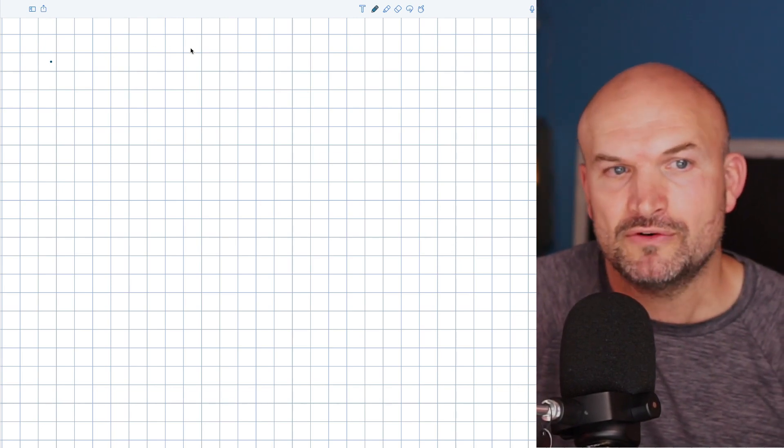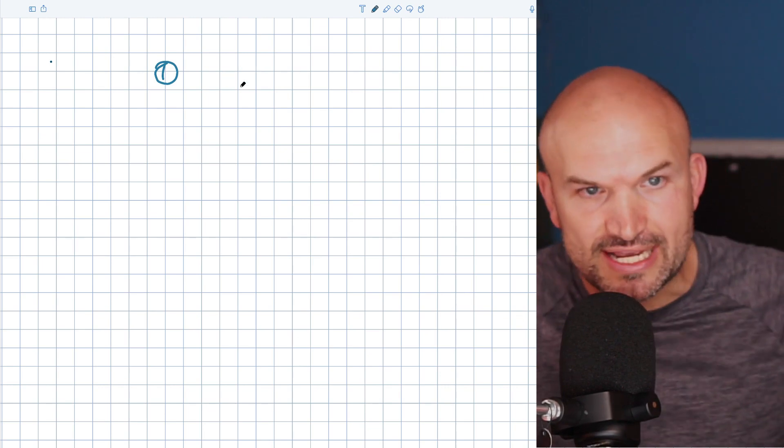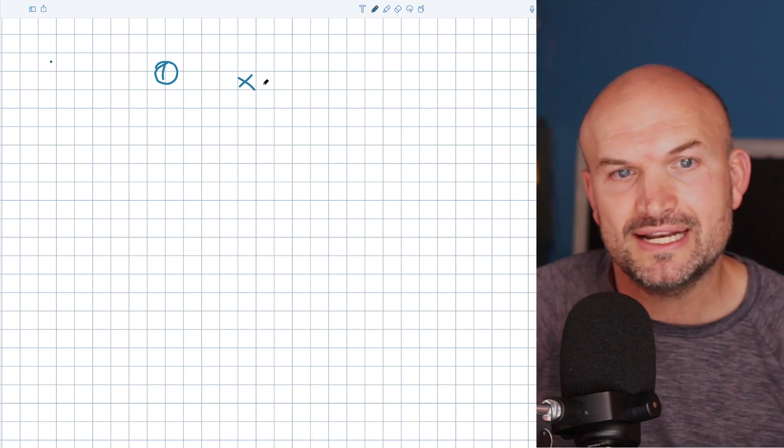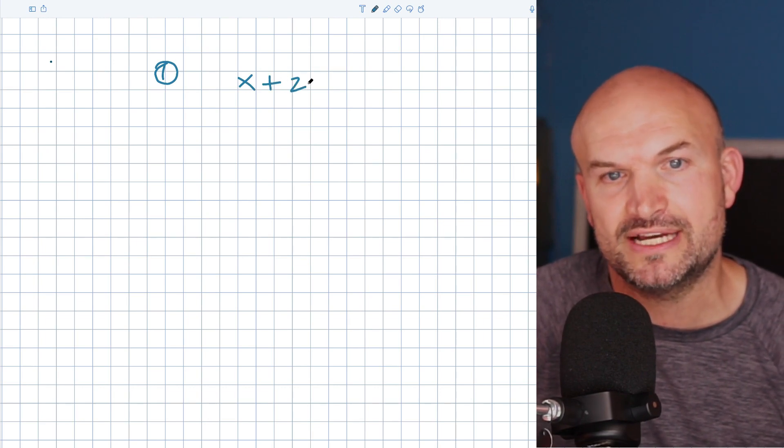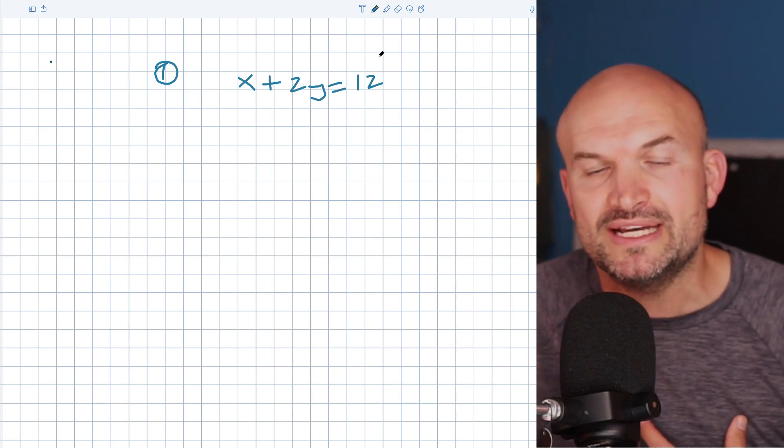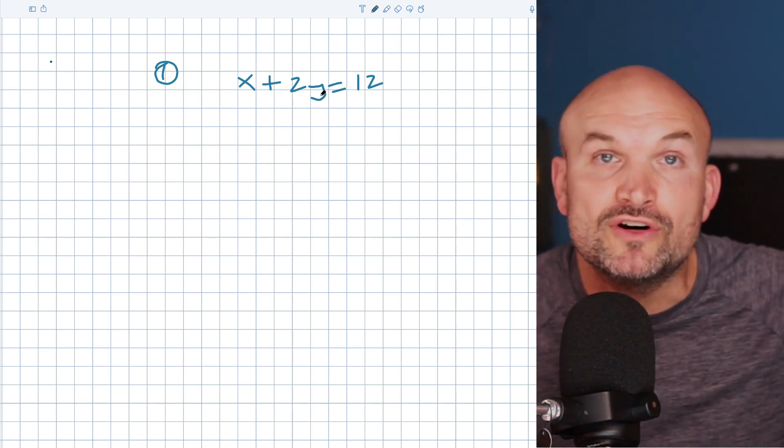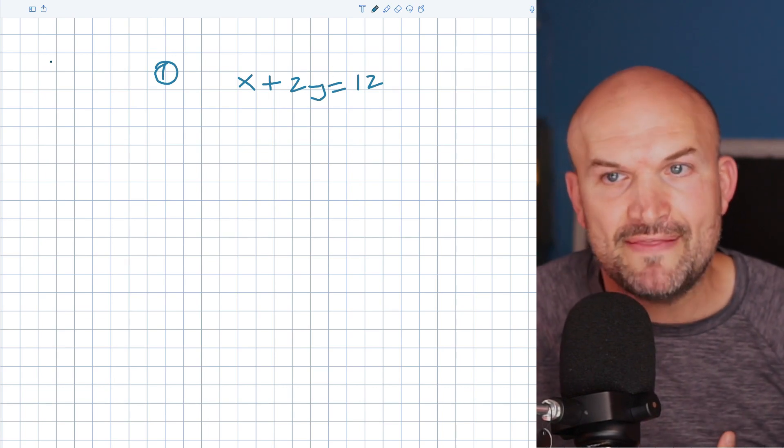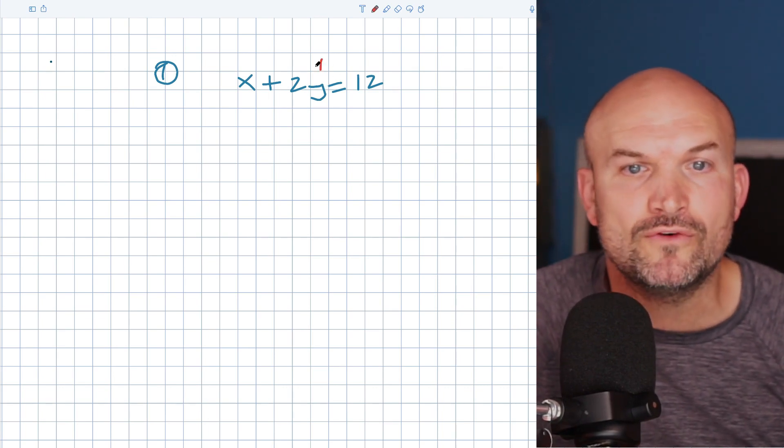So the first thing that I want to cover with you that I think all students need to understand before they get started in linear equations is be able to solve for y. So if we take a look at an example, like x plus 2y equals 12. One of those key things that we need to do is called converting something or an equation from standard form into slope intercept form. And that's going to all come from solving for our variable y.